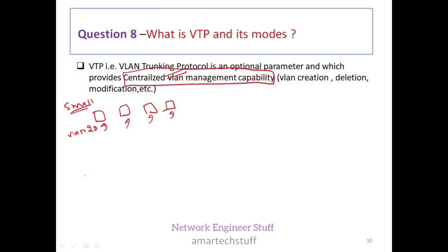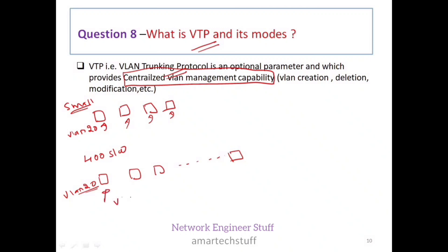But in a large organization with 400 switches, manually configuring VLAN 20 on all 400 switches is not feasible. The manual effort would be enormous. To reduce this difficulty, VTP is introduced. You configure VLAN 20 on one switch and it gets replicated to all the remaining 399 switches automatically.